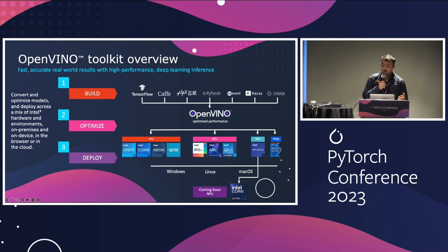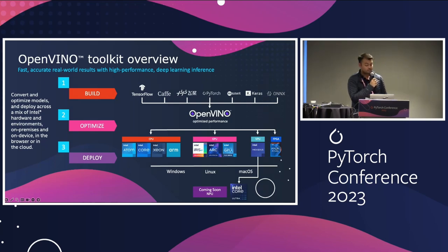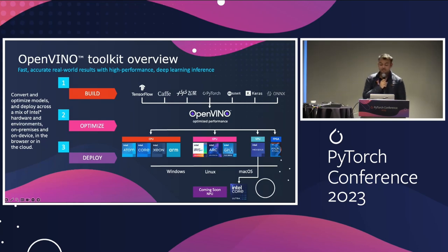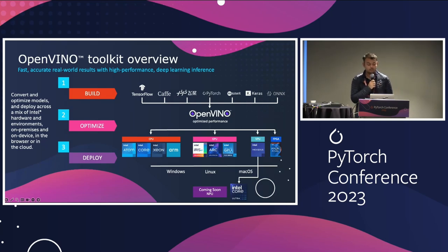OpenVINO enables high-performing applications and algorithms to be deployed in the real world. The path to inferencing with OpenVINO is simplified with a streamlined development workflow. With a write-once, deploy-anywhere approach, developers can write an application once and deploy it across all Intel architecture, including Intel CPUs, Intel GPUs, Intel VPU, and Intel FPGAs. If you have a system with an ARM-based CPU, you can also leverage OpenVINO benefits on ARM CPU as well.